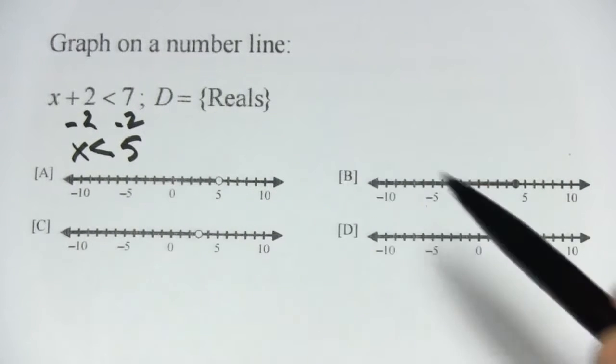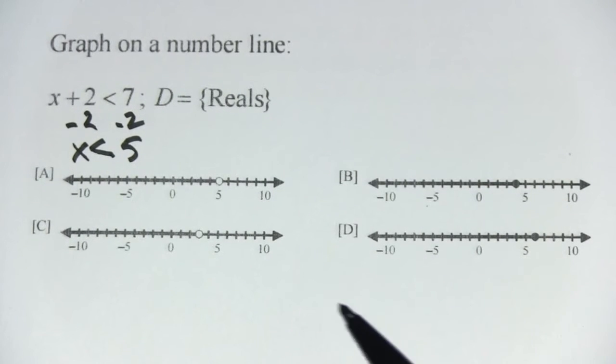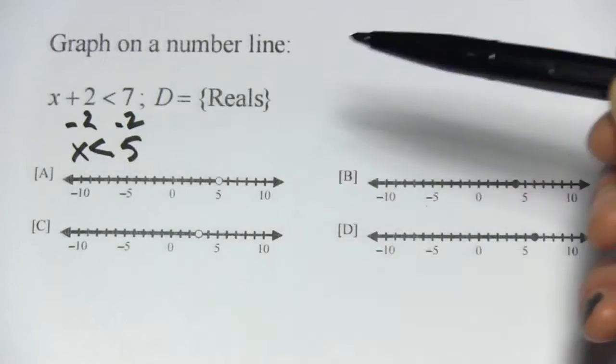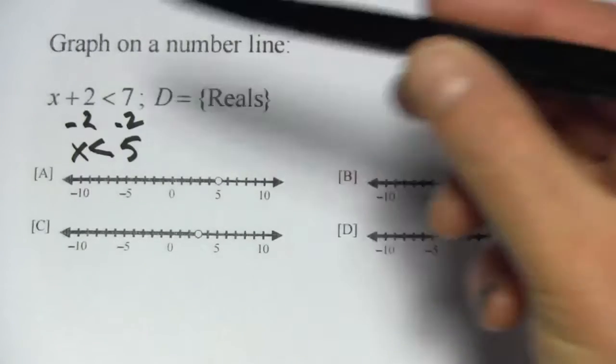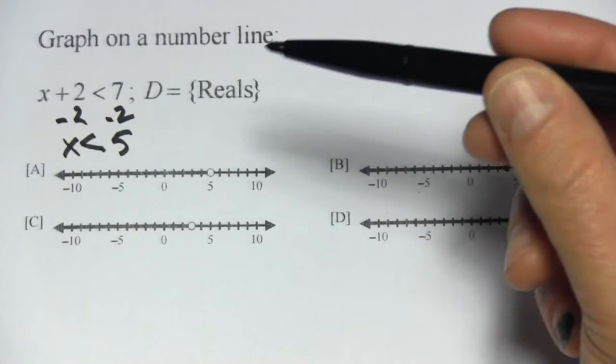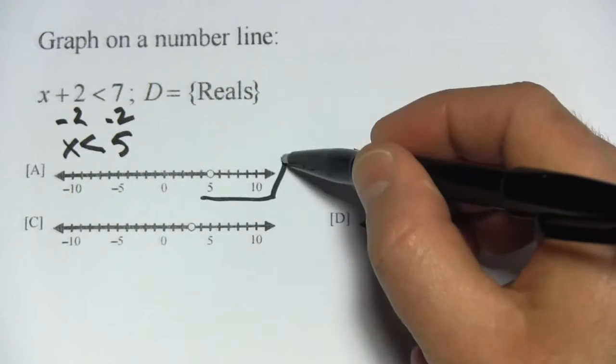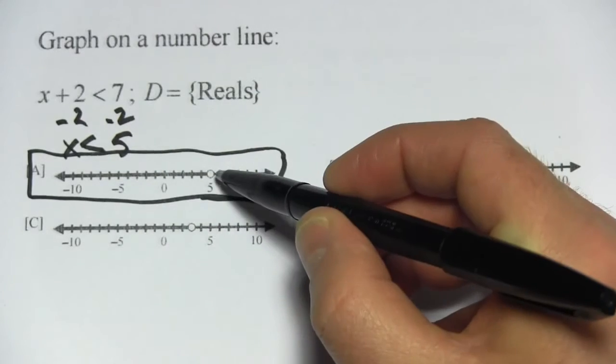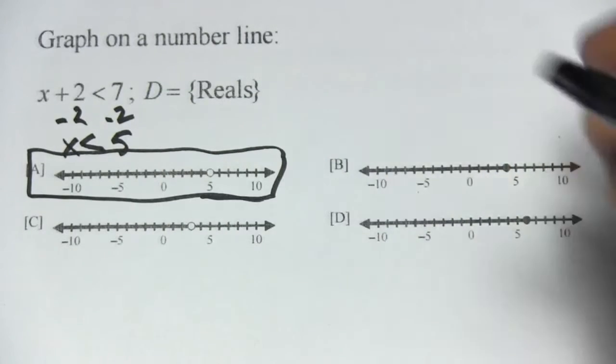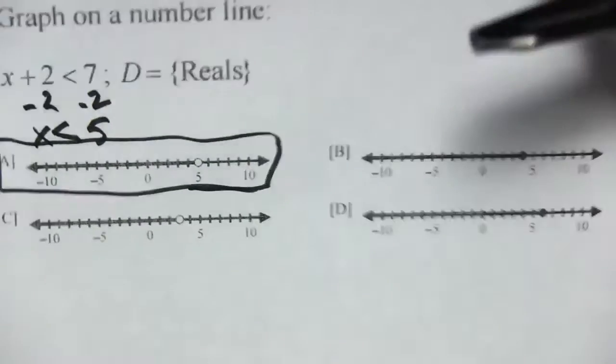It's everything less than 5. That doesn't include 5. So we're going to have an open dot and since it's less than, we're going to be headed that way. So we're looking for the shading to go that way and an open dot at 5 and that looks like an open dot at 5 shaded in that direction.